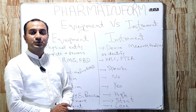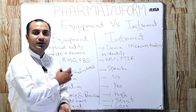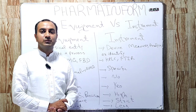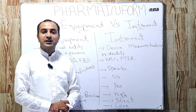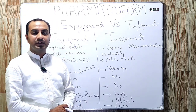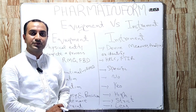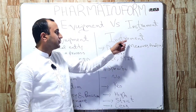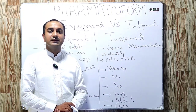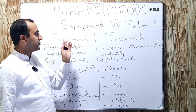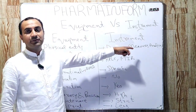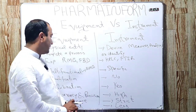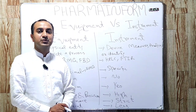The next difference is qualification and calibration. For equipment, we use qualification — equipment is always qualified and the process of qualification applies to equipment. In the same way, the process of calibration is used for instruments, and the term calibration is not used for equipment.